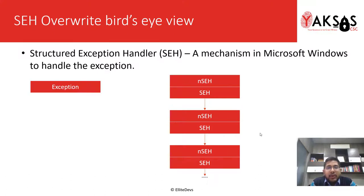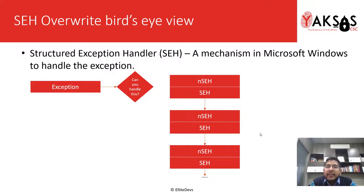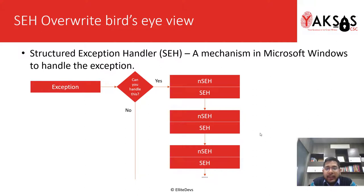Now let's say an exception arises in a program. The program checks the SEH handler and asks whether it can handle this exception or not. The NSEH handler can say either yes, or it can say no, and the program moves on to the next SEH handler record.